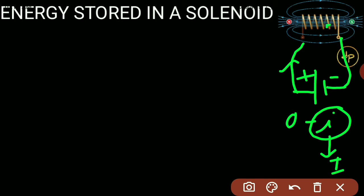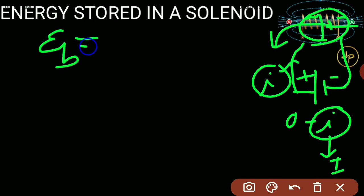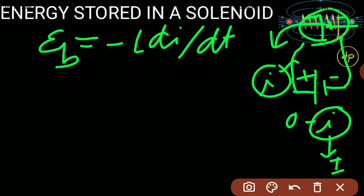The polarity of the back EMF will be in the reverse direction, opposing the increase in current. The back EMF will try to send current in the opposite direction, reducing the increase. The back EMF at a particular time when current is I is given by minus L dI/dt.